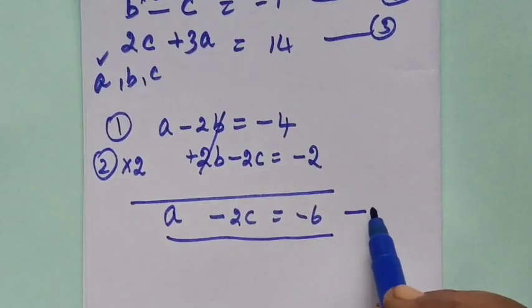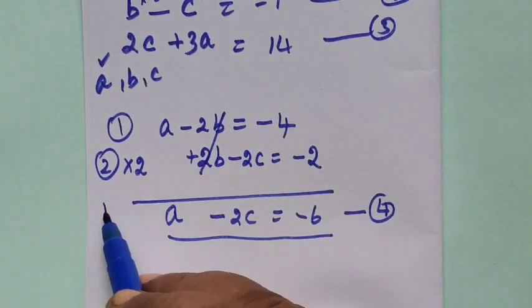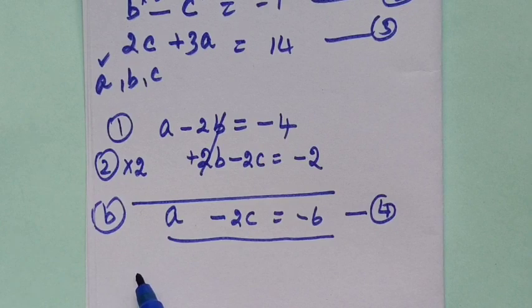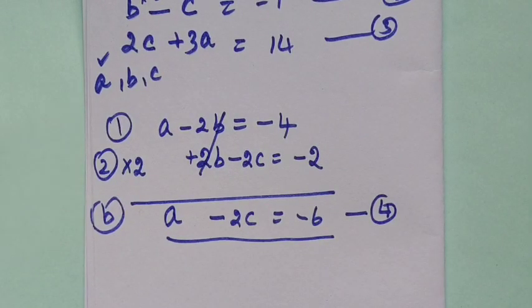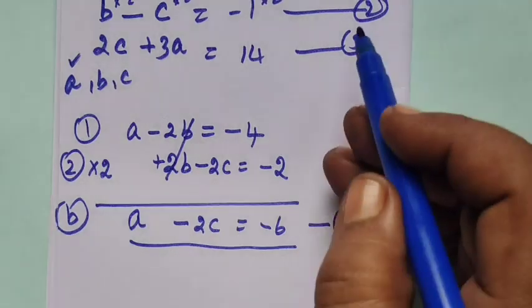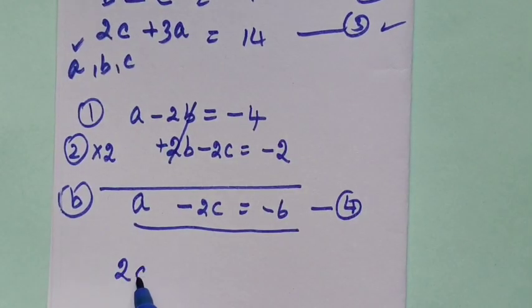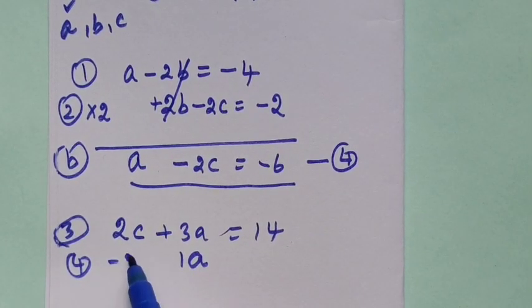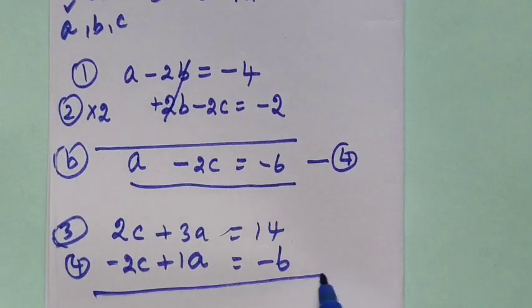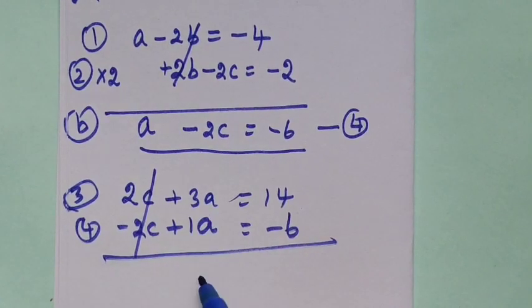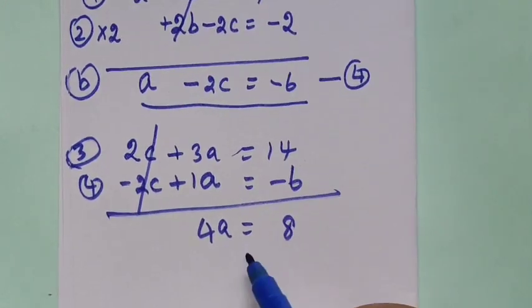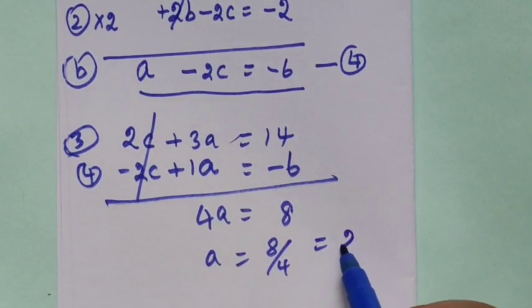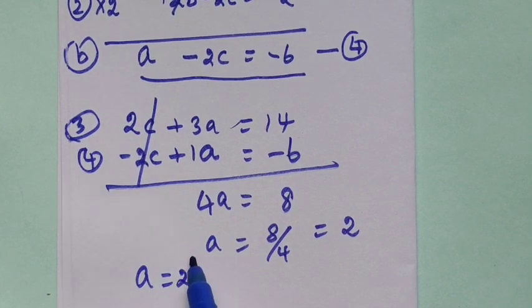Then we have cancelled b. Next time cancel a minus 2c. Equation 3: 2c plus 3a equal to 14. Equation 4: a minus 2c equal to minus 6. Adding them, 4a equals 8. A value is 8 by 4 equal to 2.